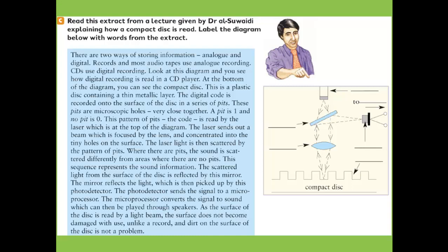The scattered light from the surface of the disc is reflected by a mirror. The mirror reflects the light, which is then picked up by a photo detector. The photo detector sends the signal to the microprocessor. The microprocessor converts the signal to sound, which can then be played through speakers. As the surface of the disc is read by a light beam, the surface doesn't become damaged with use, unlike a record, and dirt on the surface is not a problem.